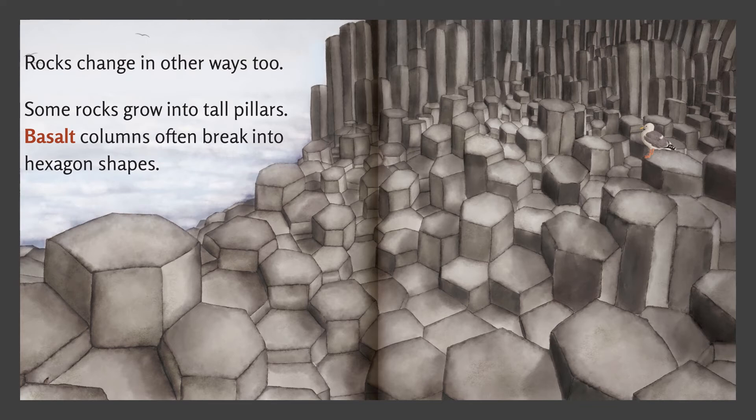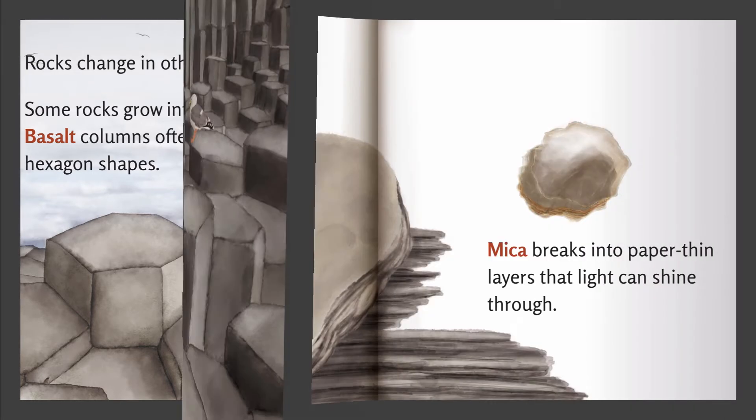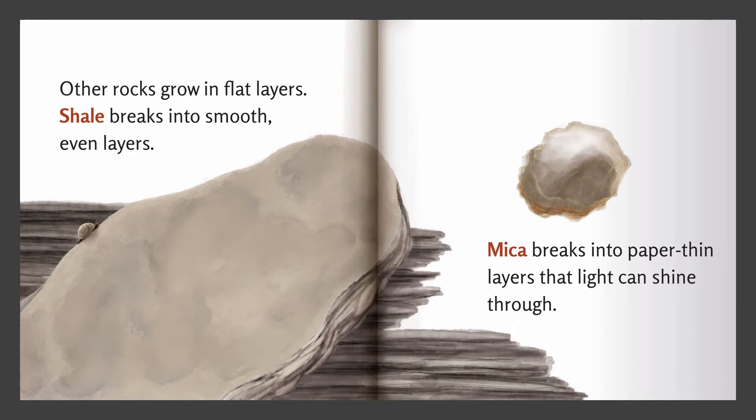Rocks change in other ways, too. Some rocks grow into tall pillars. Basalt columns often break into hexagon shapes. Other rocks grow in flat layers. Shale breaks into smooth, even layers. Mica breaks into paper-thin layers that light can shine through.